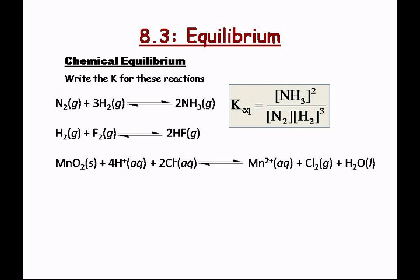Let's try the next one. First, make sure the reaction equation is balanced — and yes, it is. So let's write the equilibrium constant. It's always going to be something divided by something else. It's going to be concentration of HF squared on top, divided by concentration of H₂ times the concentration of F₂ on the bottom. Remember, brackets mean molar concentration.